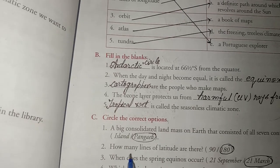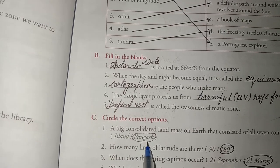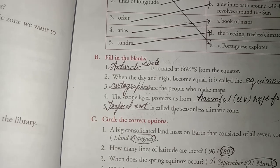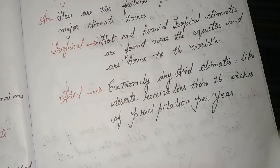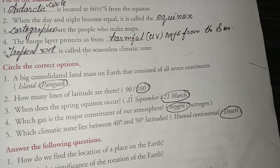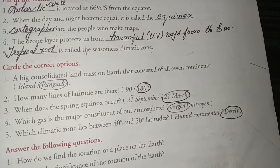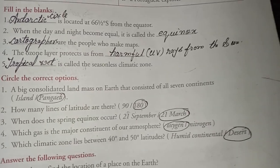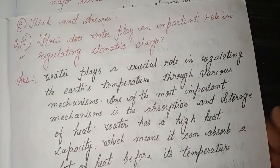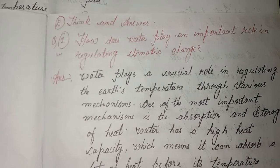Circle the correct option. Answers: Pangea, 180 degrees, 21st March, oxygen, desert.